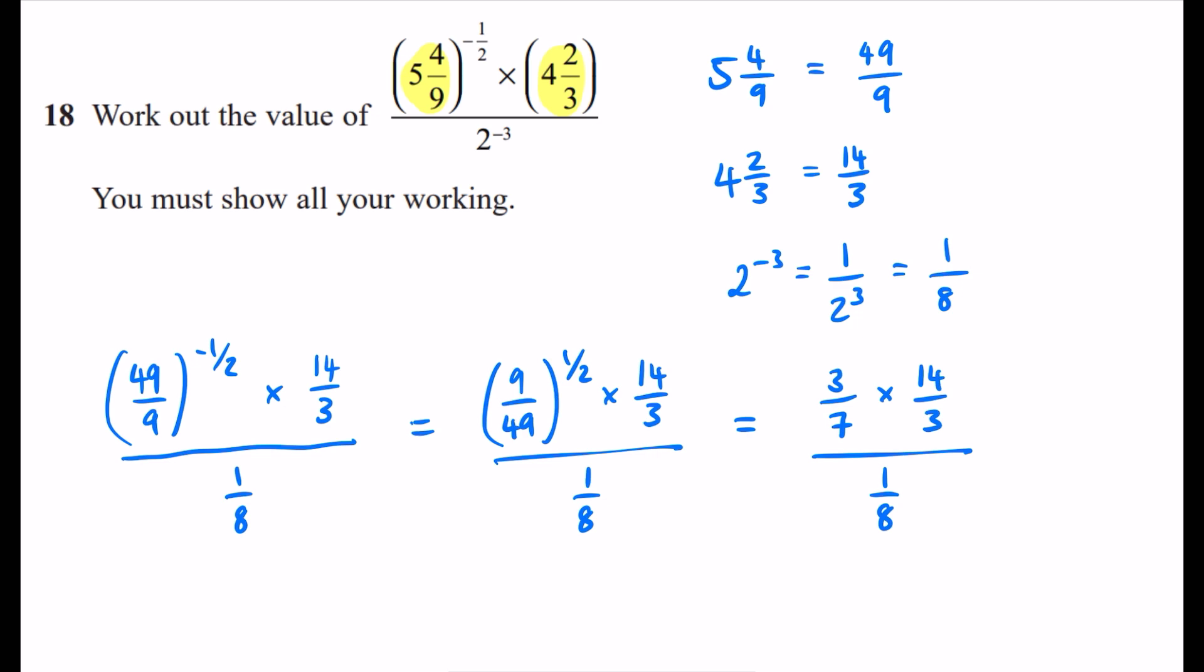Now, rather than doing 14 times 3 and dividing it by 21, I'm wondering if you can spot the shortcut here. The shortcut is that because we have a 3 in the numerator and a 3 in the denominator, we can simply cancel those out.